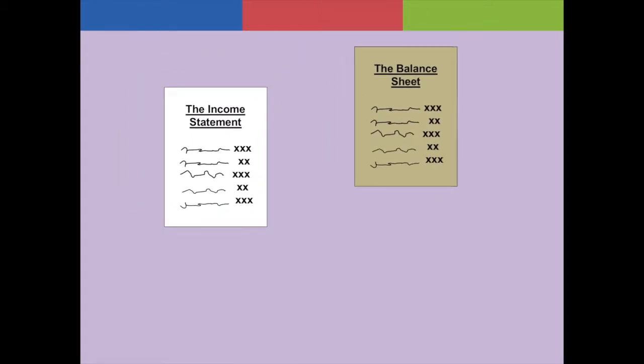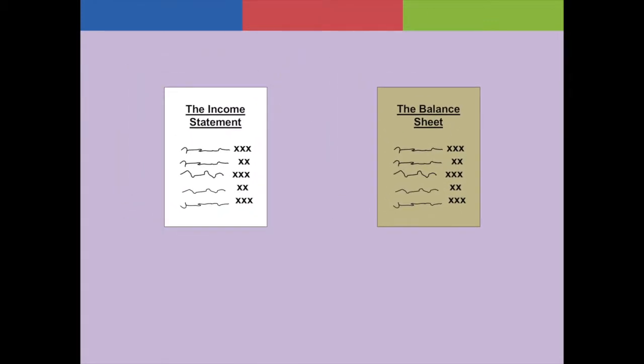The accounting ratios use the financial information mostly from the income statement and balance sheet. From the income statement, common information used will be the revenue, cost, and profit figures. From the balance sheet, the typical information used will be the current assets and liabilities figures including inventory, debtors, and creditors.